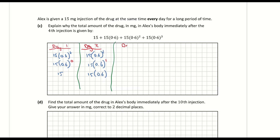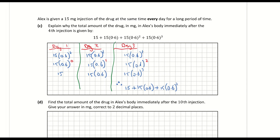On day three, t equals 2, giving 15 times 0.6 to the power of 2. Notice the powers don't match the day number — day one was power zero. You can see I'm building a geometric series by adding them together: 15, plus 15 times 0.6, plus 15 times 0.6 squared, and so on. Let's also do day four just to be thorough.